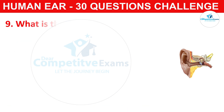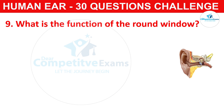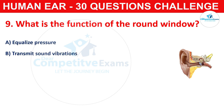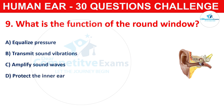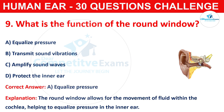Question number nine: what is the function of the round window? Your options are equalize pressure, transmit sound vibrations, amplify sound waves, or protect the inner ear. The correct answer is A, that is equalize pressure. The round window allows for the movement of fluid within the cochlea, helping to equalize pressure in the inner ear.